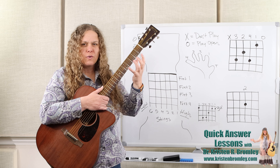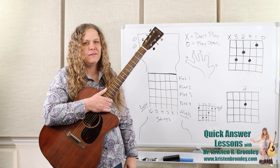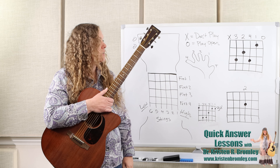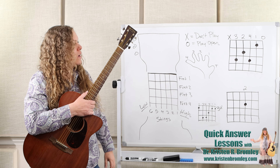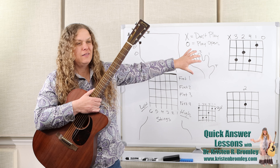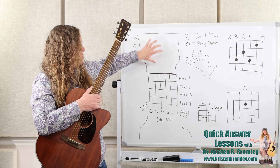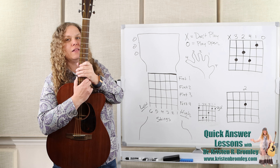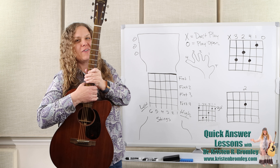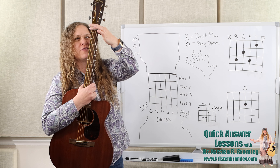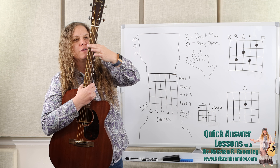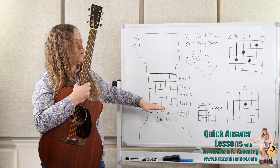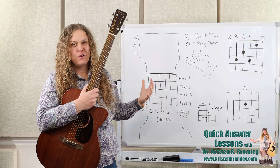Tablature just means it's showing us a snippet of the neck and how to play something on it. The way the guitar lines up to these is just like so — the headstock at the top, lining up just like if I'm holding my guitar straight up in the air, with frets 1, 2, 3, and 4 being the spaces.